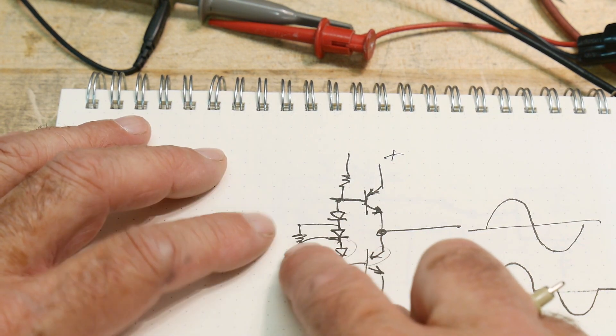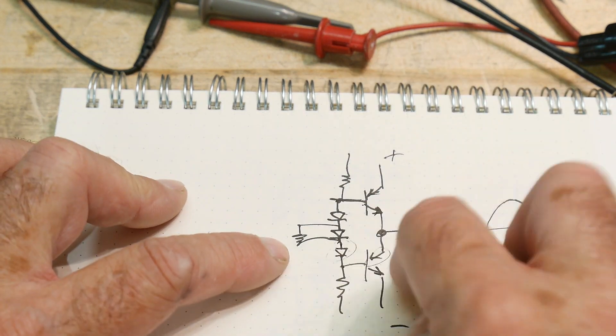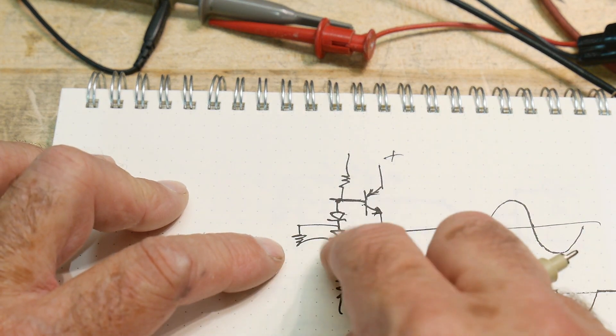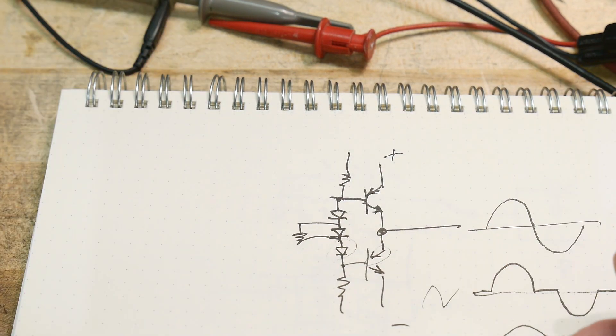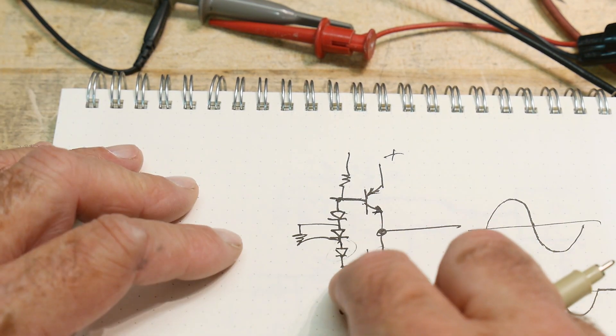So we'll try those two things out. We'll figure out what value of resistor do we need to make it work, and if a three-diode thing is good enough, because I've seen that in lots of circuits before.